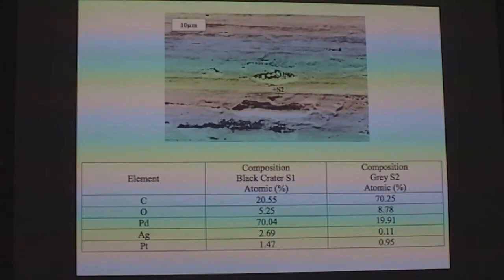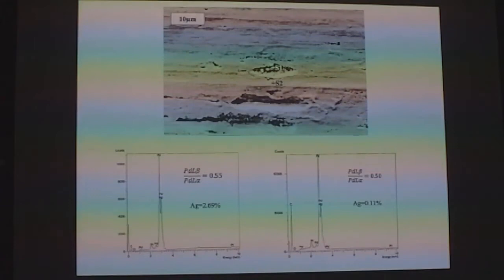In the effect, we used the palladium beta L alpha ratio at 0.55, whereas it's expected to be 0.12 or 0.42. After deconvolution, this comes out to be almost 3% silver from a spot about one micron diameter.